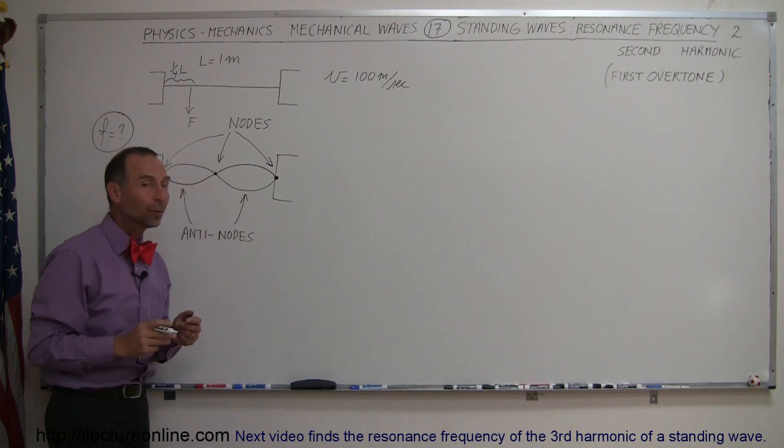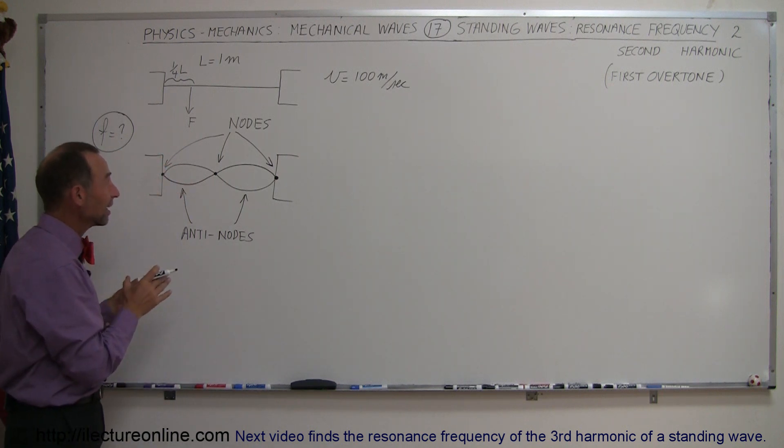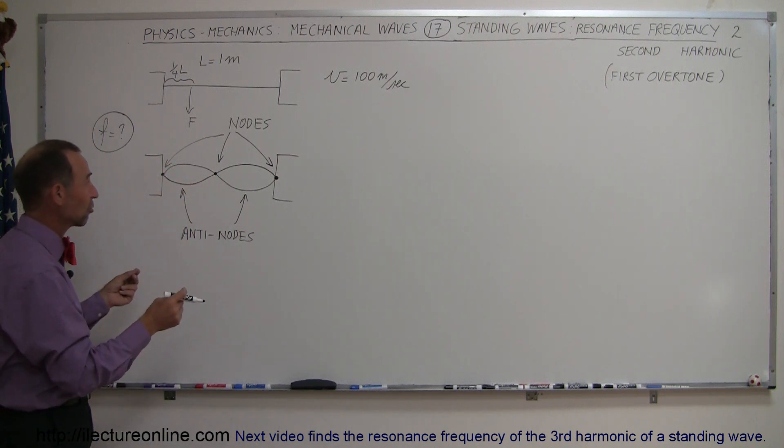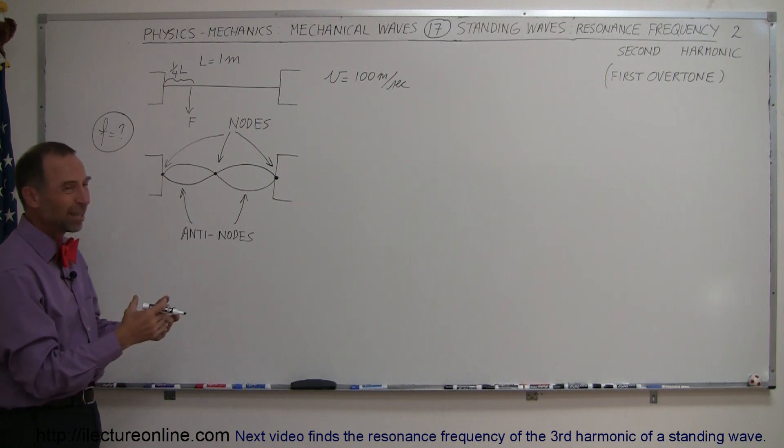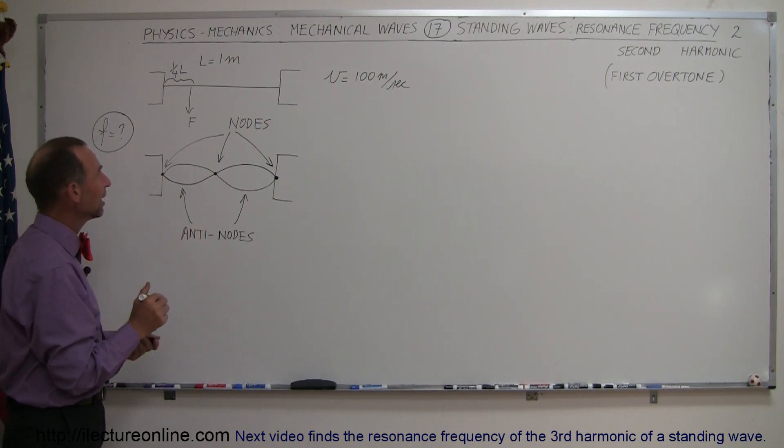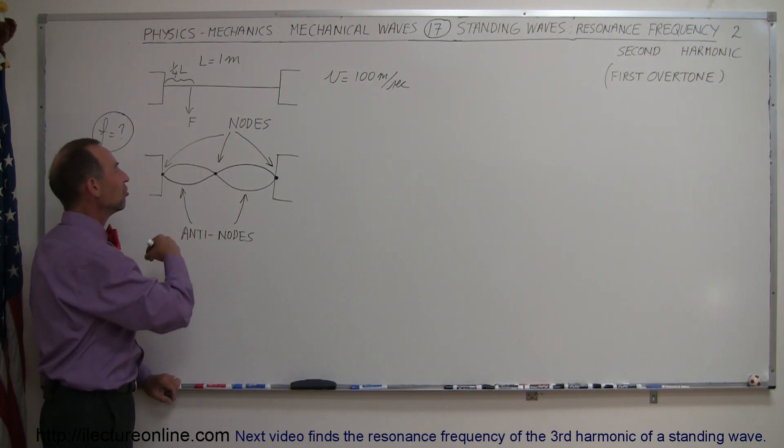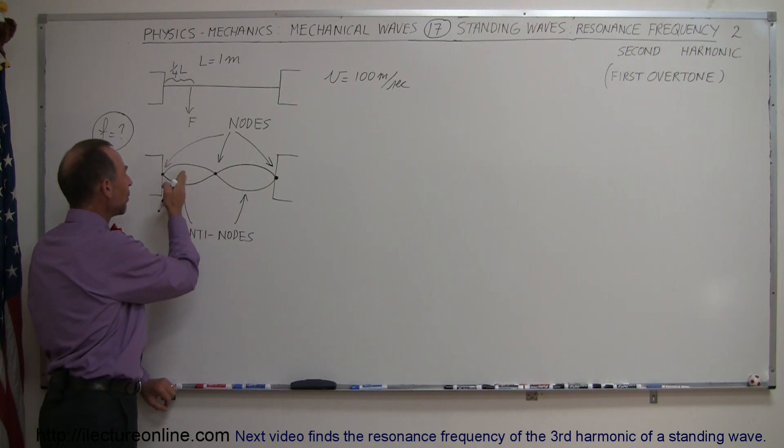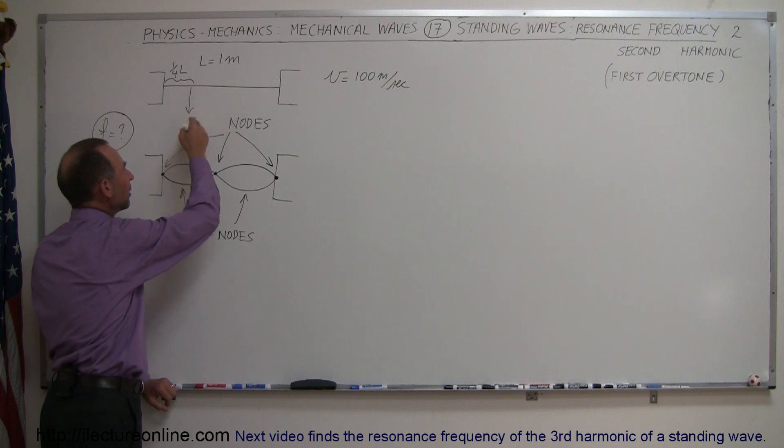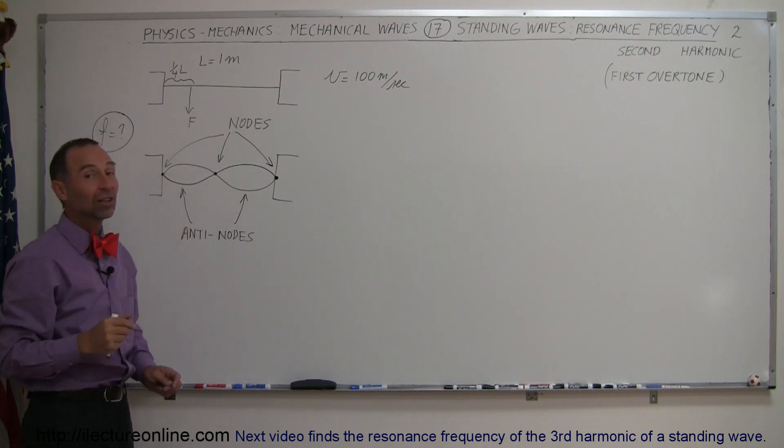Now, notice that nothing really was different between this string and the previous string. It was the same string, same length, same tension, therefore same velocity. The only difference was that we put energy into the spring in a different way, where we pulled it 1 quarter from the end of the string instead of in the middle, and now we have a very different oscillation pattern.